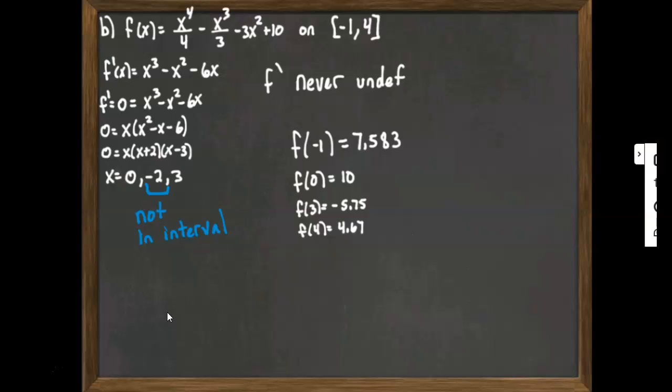So again, I'm going through this evaluating very quickly. But all I'm doing here is I'm going back not to the derivative, but to the function, plugging each of those numbers in. Now, whichever one of these happens to be the biggest number out of the four numbers here will be my maximum. Whichever happens to be my smallest number will be my minimum.